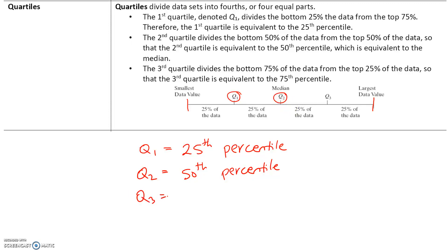Q3, the third quartile, separates the bottom 75% of the data values from the top 25% of the data values. So Q3 is equivalent to the 75th percentile.